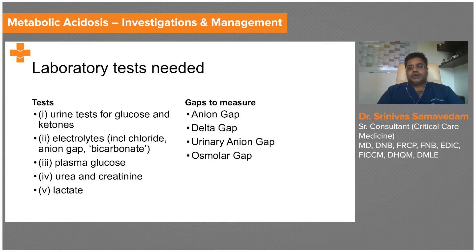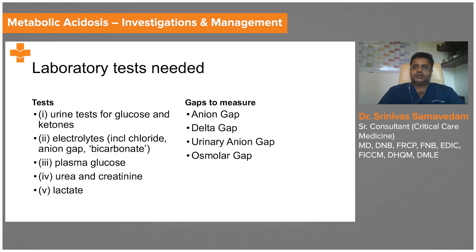What are the laboratory tests we need to assess somebody who has a high anion gap metabolic acidosis? First, you need to look at the urine test for glucose to see whether this patient has hyperglycemia. At the same time, look for ketones in the urine to make sure that you are not dealing with diabetic ketoacidosis.